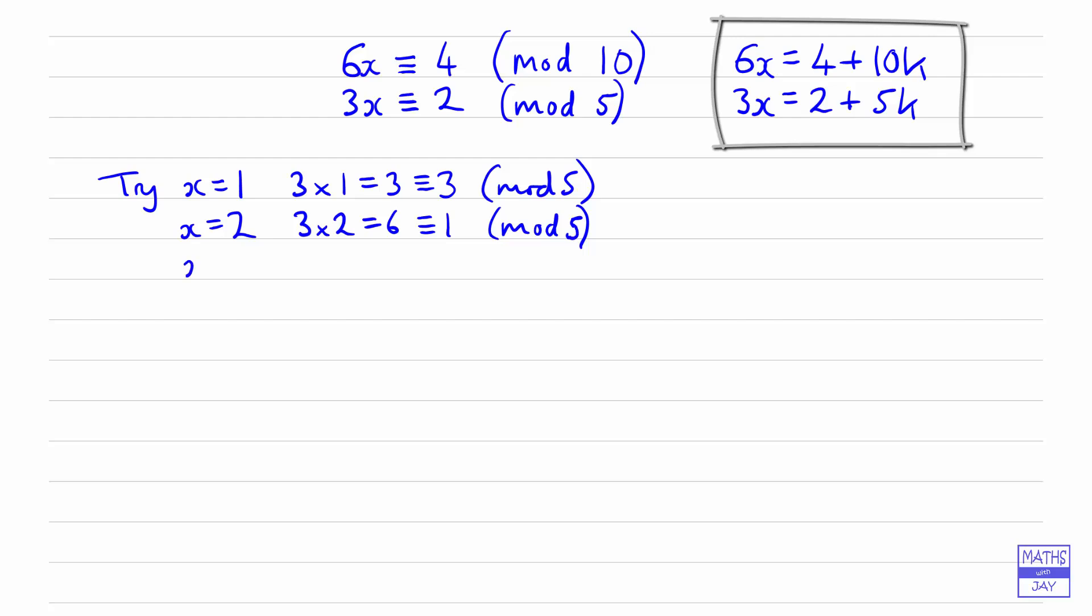And if we try x equal to 3, 3 times 3 is 9, so that's congruent to 4 mod 5. Nearly there. We've only got 5 numbers to try altogether, haven't we? So we've got to be nearly there.